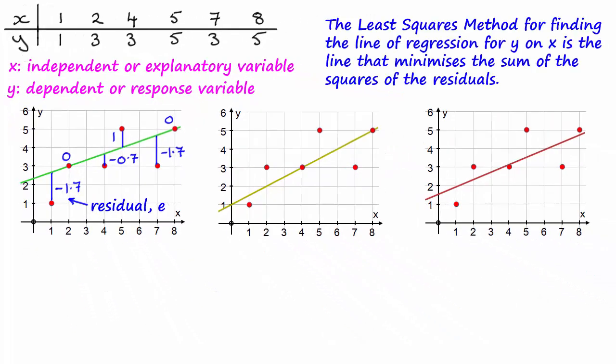Now the least squares method for finding the line of regression for y on x is the line that minimizes the sum of the squares of the residuals.